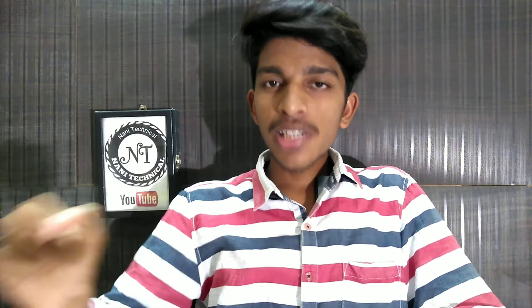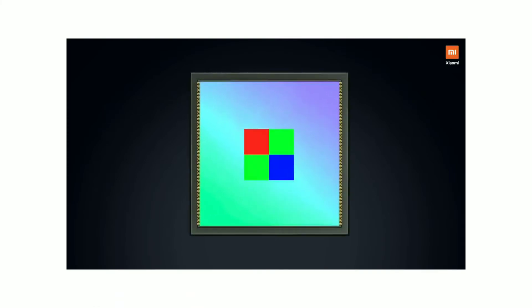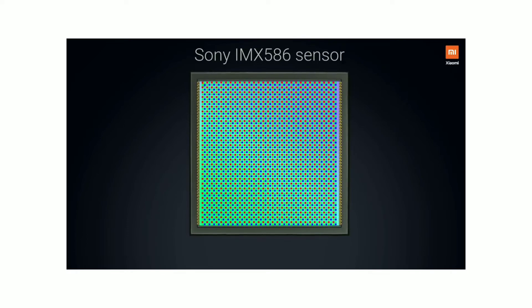Here you have a 4-to-1 pixel grouping, so you need to understand exactly what these pixels are. You have 64 megapixel cameras and you can capture with the camera sensor. Here you have 192 megapixel resolution giving you 12 megapixel photos. 1 megapixel is 1 million pixels; 48 megapixel is 48 million pixels; 64 megapixel is 64 million pixels; and there are 100 megapixel and 192 megapixel sensors.